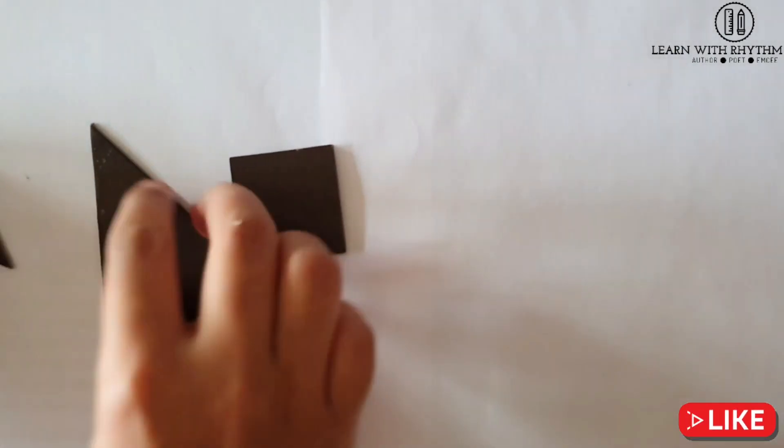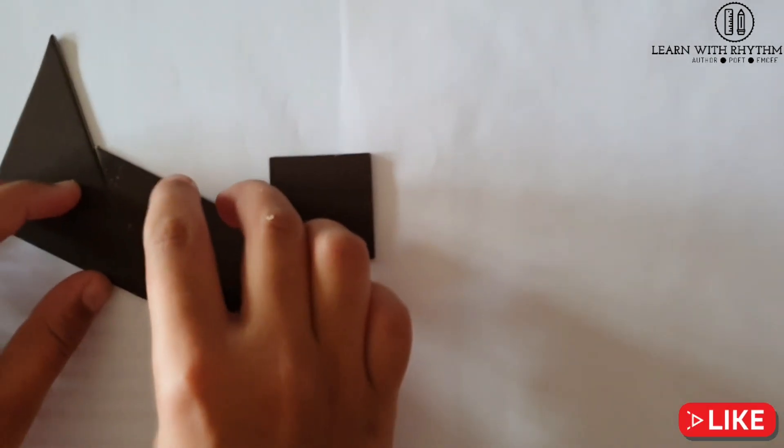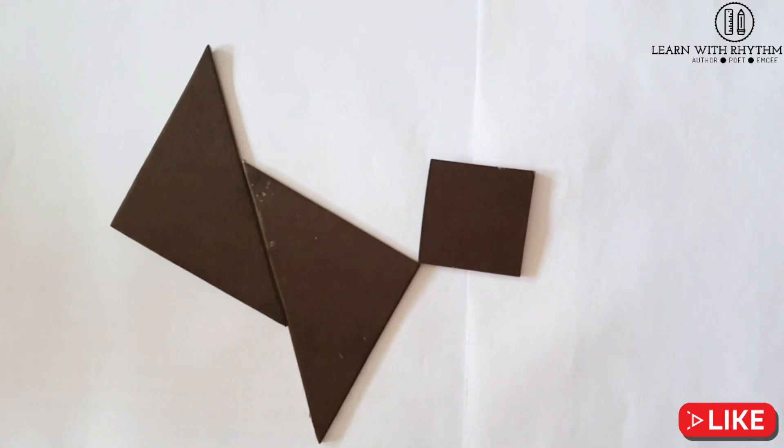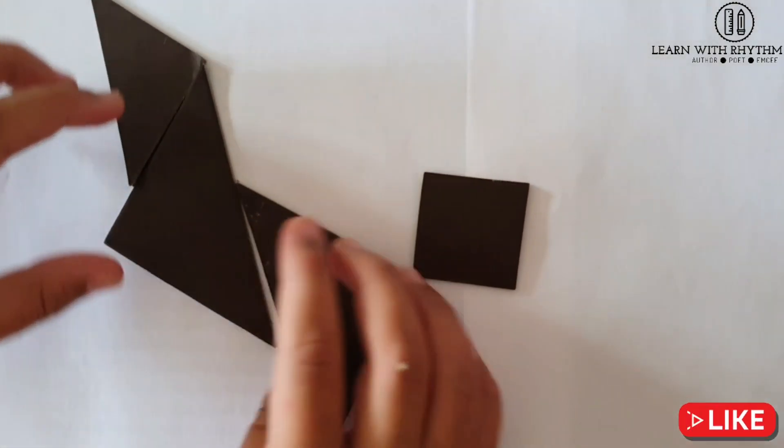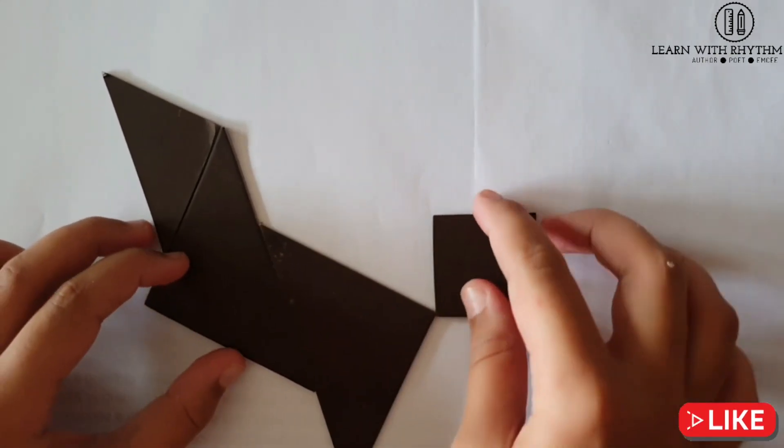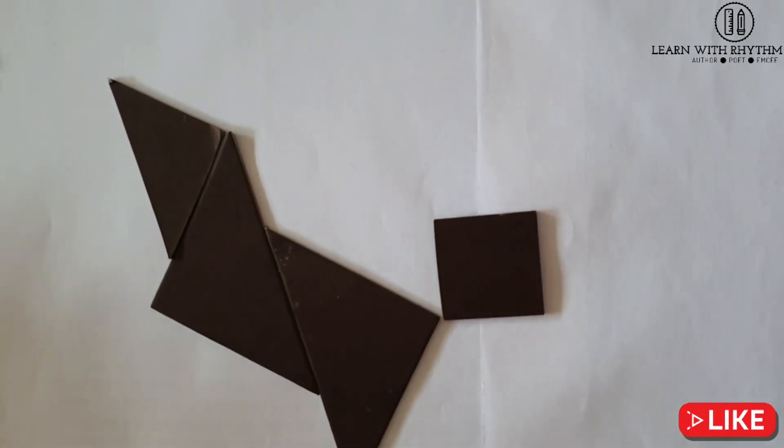Then we take the other piece and put it here. Then we take our medium triangle and put it here. You can refer to my previous videos to understand Tangram better.